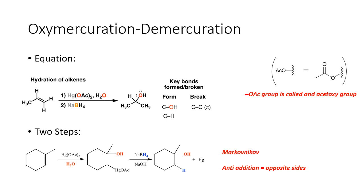The next reaction we're going to discuss is called the oxymercuration-demercuration reaction. It happens in two steps: the first step is called the oxymercuration part, and the second step is called the demercuration part. The end product of this reaction is forming an alcohol, and it follows Markovnikov's rule in that the alcohol will end up on the more substituted side.